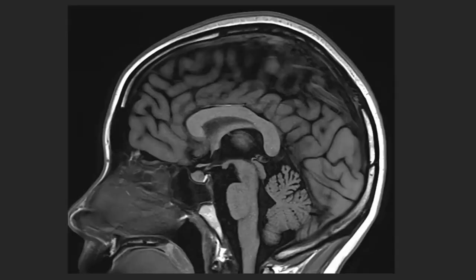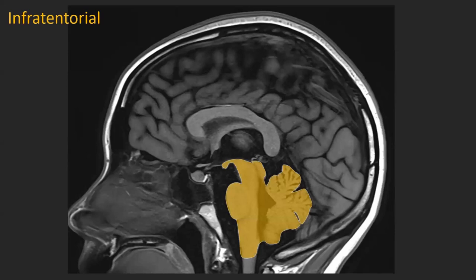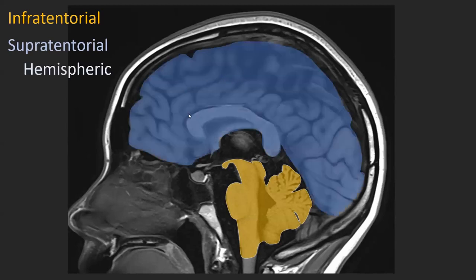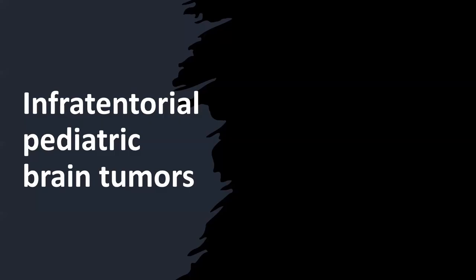In this presentation I'm going to discuss pediatric brain tumors based on location. I'll start with tumors located infratentorially, like in the brain stem or the cerebellum. Then I'll discuss supratentorial brain tumors, making a distinction between tumors in the hemispheres and midline tumors. Midline tumors are found in small anatomic regions like the pituitary region, the optic chiasm, hypothalamus, and the pineal gland. Despite the small size of these regions, a lot of brain tumors are found there.